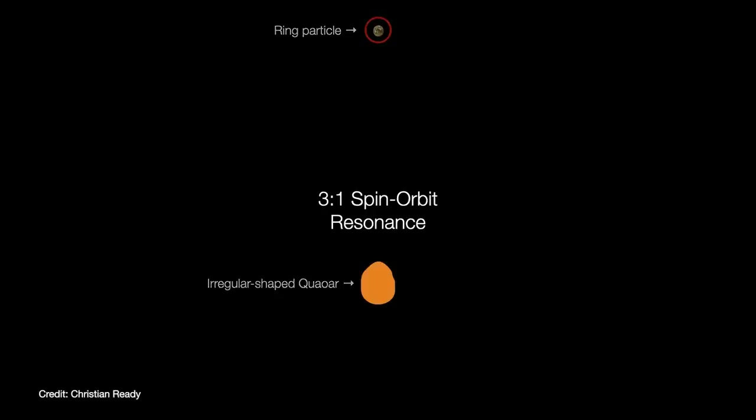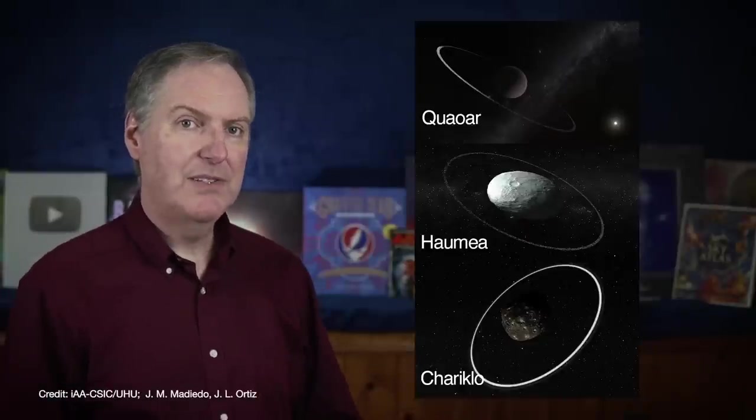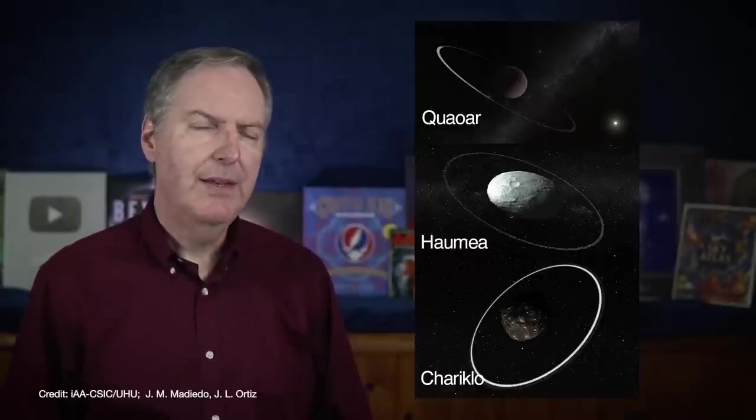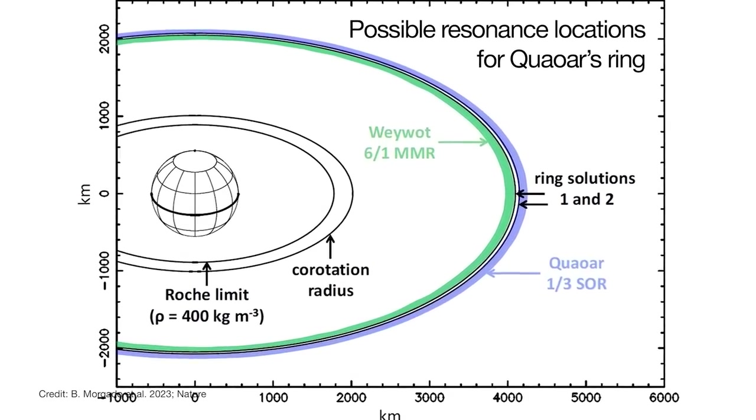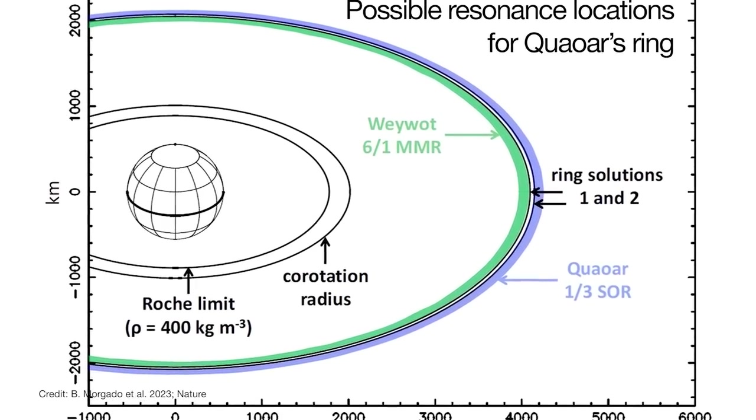The idea goes like this. Quaoar is a small body and therefore probably has some kind of an irregular shape. If so, then one side of the planet could exert a little extra gravitational tug on the ring particles as it swings around every three orbits. And this same three-to-one coincidence has also been found in the rings of Chariklo and Haumea. They're both in a three-to-one spin-orbit resonance with their host planets. So the ring may be in just the right location where either or both of these resonances perturb the ring's system just enough to prevent them from accreting and forming a moon.